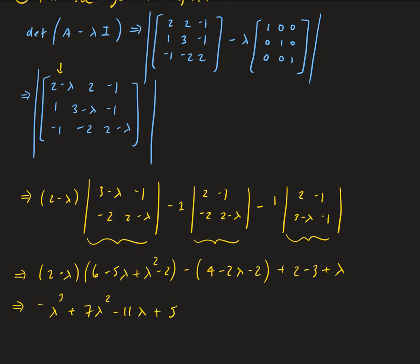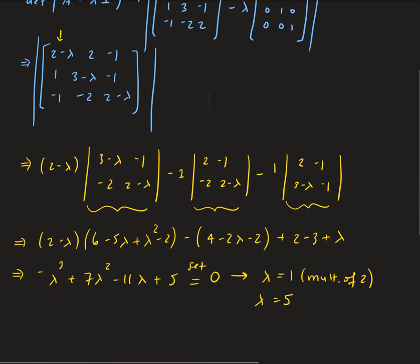We set this equal to 0 to get our eigenvalues. Solving this gives us lambda equals 1, which has a multiplicity of 2, and lambda equals 5. To solve this equation, you may want to review pre-calculus — you can use Descartes' rule of signs and then long division to find the roots. Now step 2 is to find the corresponding eigenvectors.